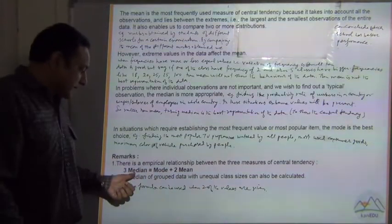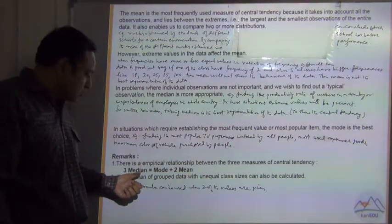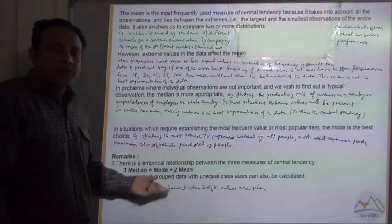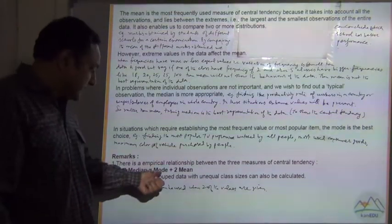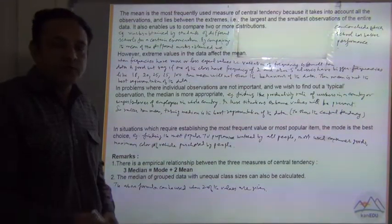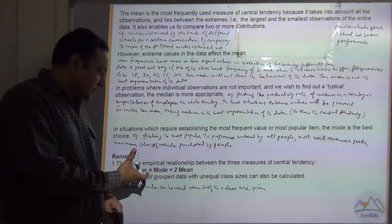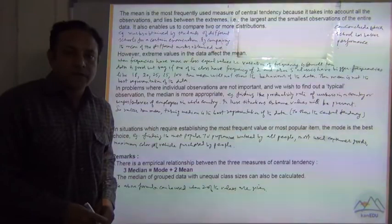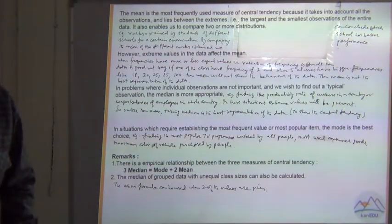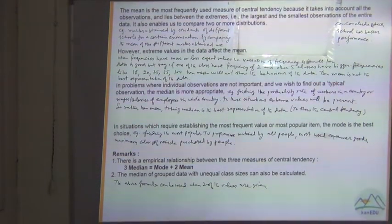The above formula can be used when 2 of the values are given. You can put the values and you know how to move from left to right. You can add, subtract, choose the sign, and then find the value. This is very easy. This is a very simple equation we can solve to find the third value. Thank you.